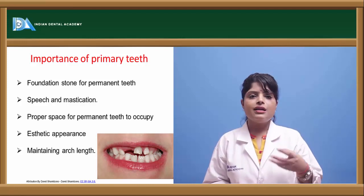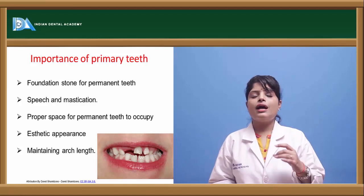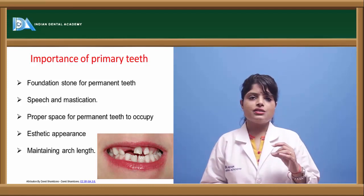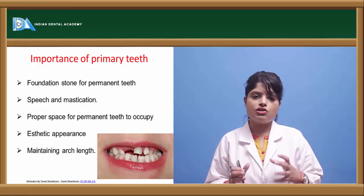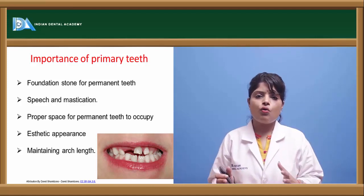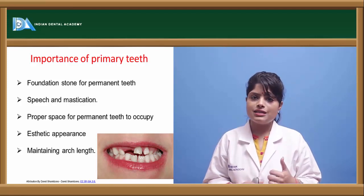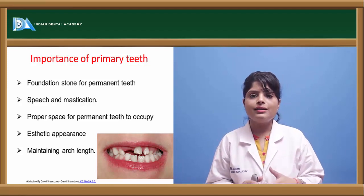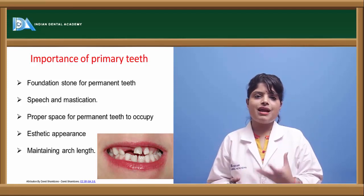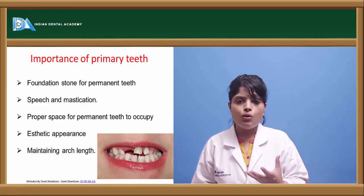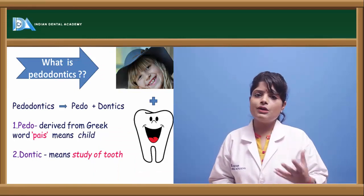Primary teeth help in maintaining the speech of the child — aesthetics, phonetics, and mastication — providing proper nutritional status by chewing various types of foods present in the diet of a child. This also helps in maintaining the general and overall health of the child along with dental health, and maintains arch integrity — the rigidity of the dental arch and various oral structures. We conclude that the child's teeth are very important.